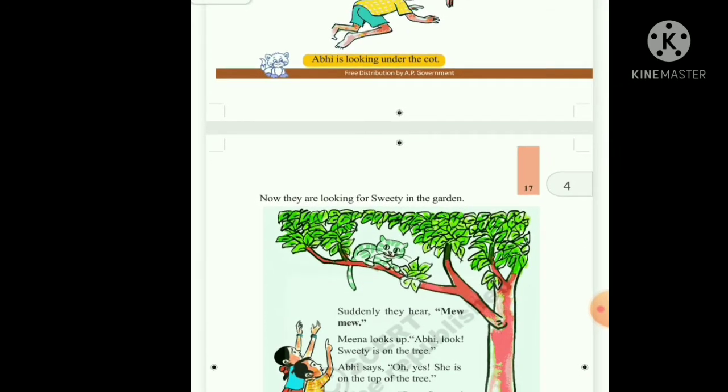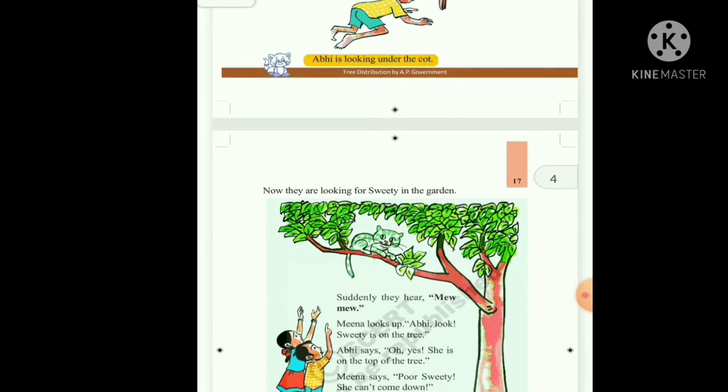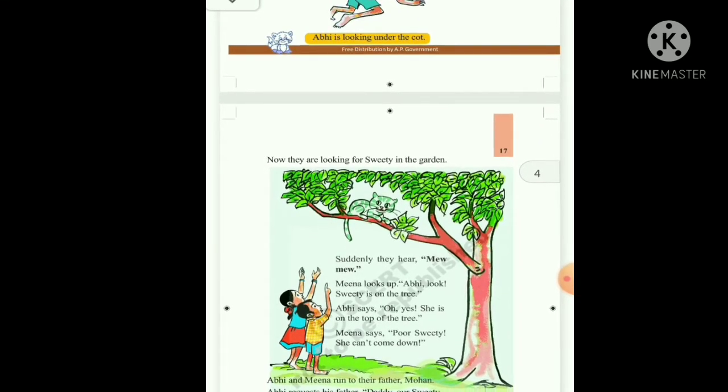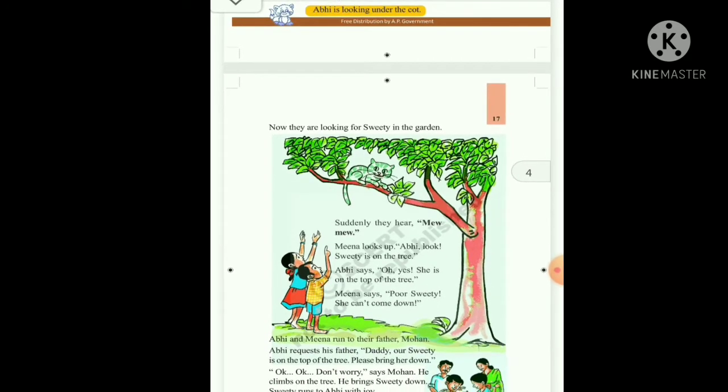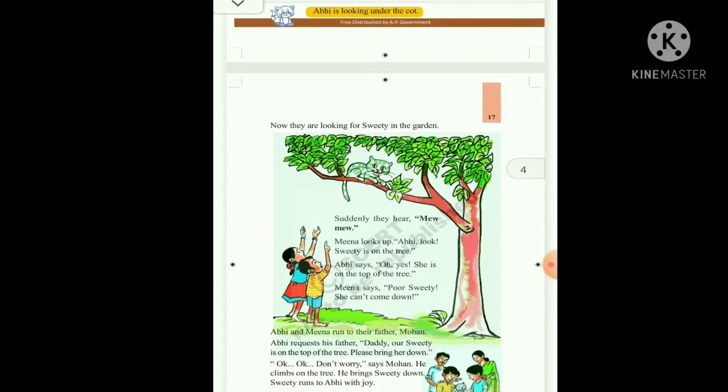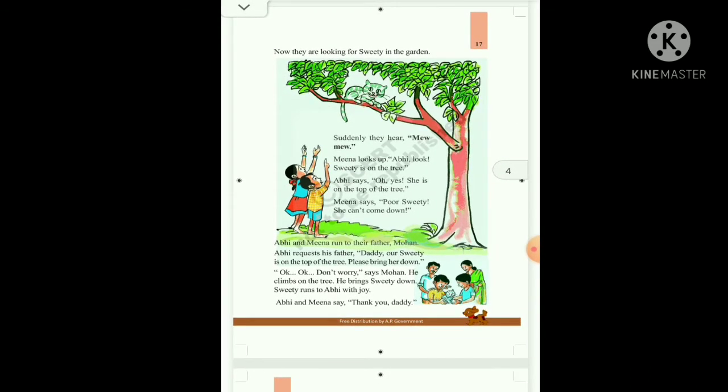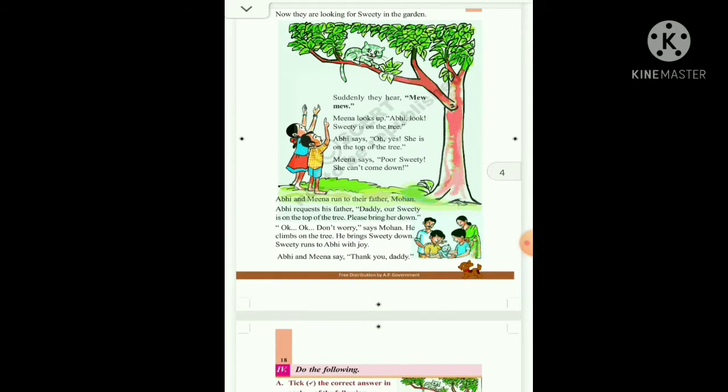Meena looks up. Abhi looks. Sweetie is on the tree! Abhi says, 'Oh yes, she is on the top of the tree.' Meena says, 'Poor Sweetie, she can't come down.' Abhi and Meena run to their father, Mohan.